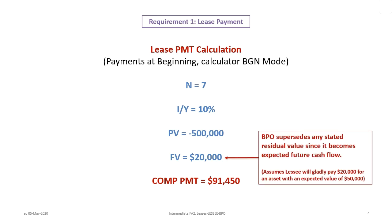Lease payment. By now you should be comfortable with how we calculate the lease payments — it's been the same every time, always from the lessor perspective with the calculator in begin mode. We have a lease term of seven years, so 7N; the interest rate implicit to the lessor is 10%, so 10 I/Y. The present value of the equipment being leased today is $500,000, entered as PV, and then we're going to use a future value (FV) of $20,000.